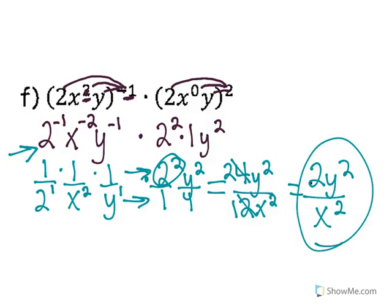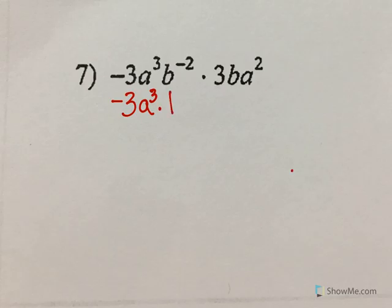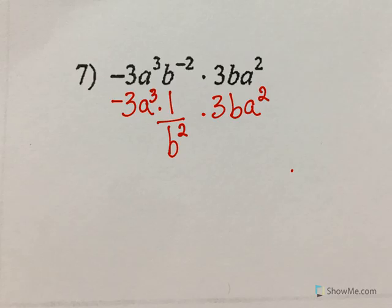Rewind at any time if you need to see this again. Let's go to number 7. Negative 3: nothing changes. A to the third: nothing changes. But b to the negative second — make it one over b squared. Times 3: nothing changes. b: nothing changes. a squared: nothing changes.